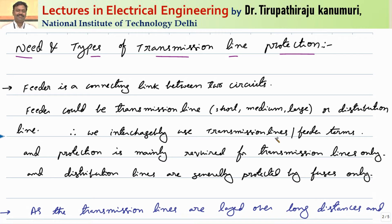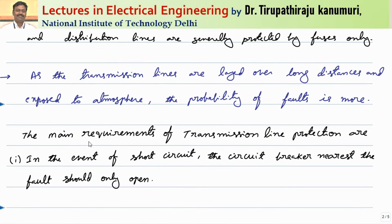That is why we interchangeably use the transmission line and feeder terms. Distribution lines are also called feeders, but generally protection for distribution lines is not done in the same way — they are protected by fuses only in most cases, due to economic concerns. Cost is a major concern for distribution lines and stability is not a major factor. Protection is mainly done for transmission lines and primary distribution, which we can also call transmission lines.